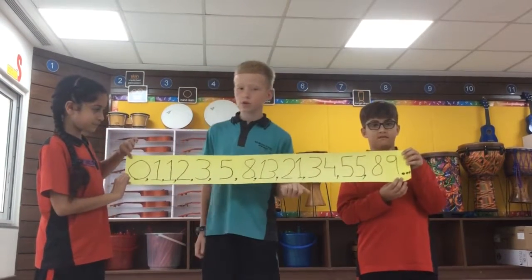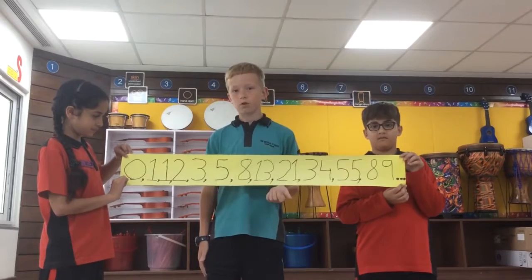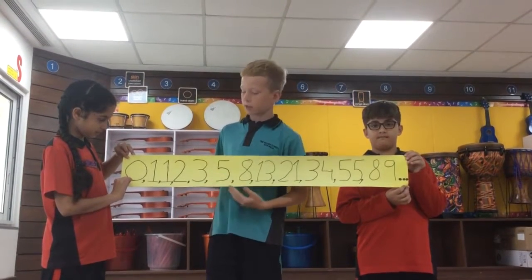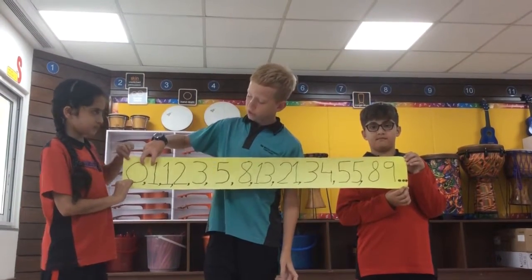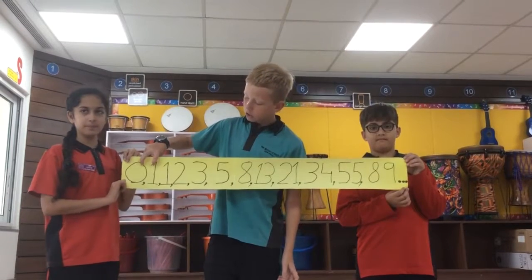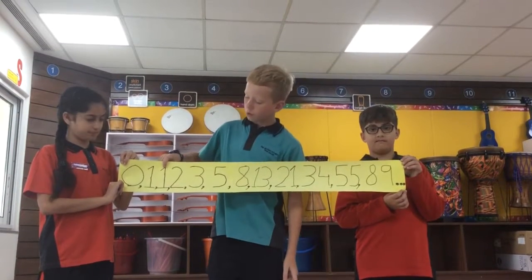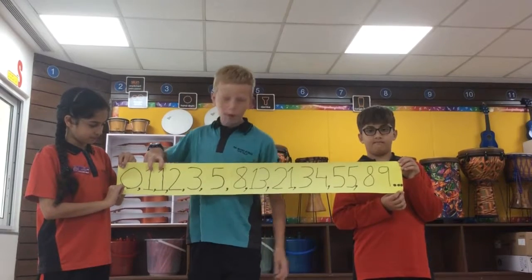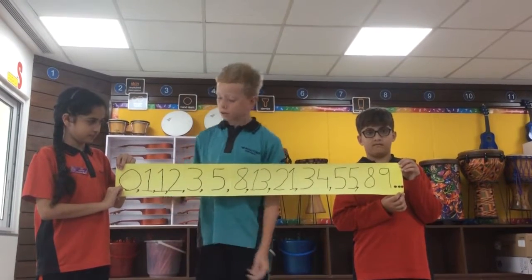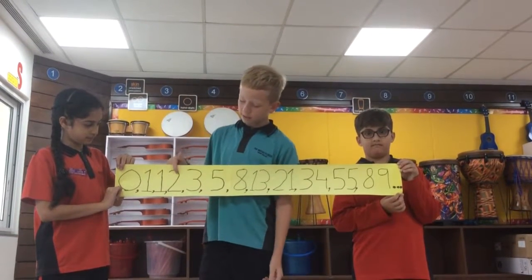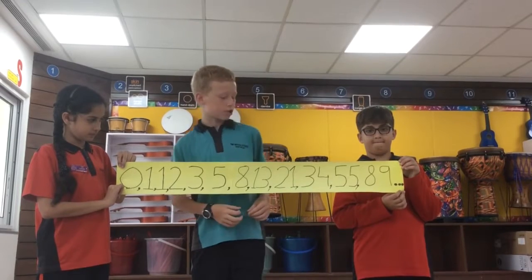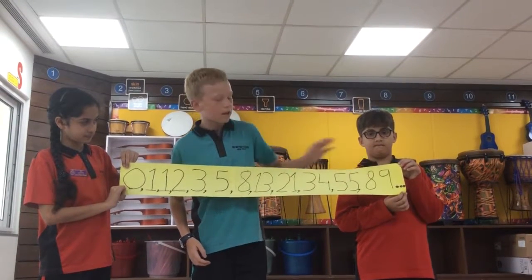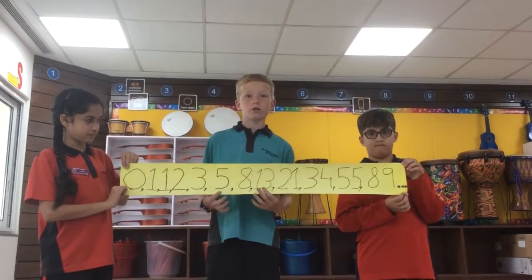I will now explain how the Fibonacci sequence is formed. The Fibonacci sequence is formed by adding the two previous numbers, 0 and 1, together to make the new number, 1. So let's have a try — 1 and 1 is 2. Everyone knows that, right? So 2 would be the next number. Let's get a bit more challenging. Let's have 55 and 89. If you add them together, you get 144.